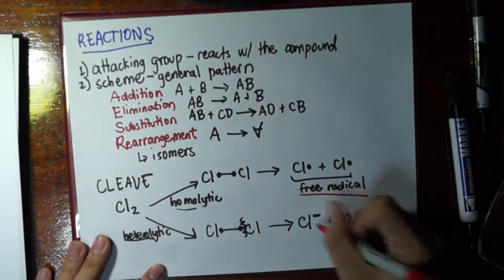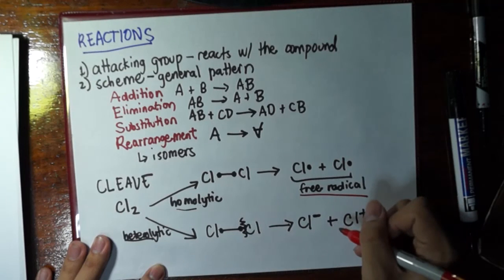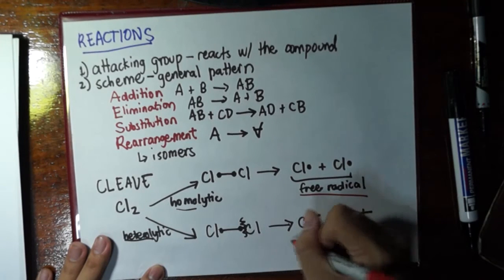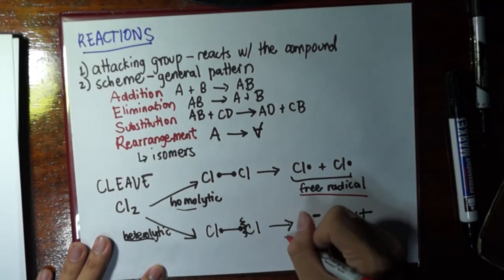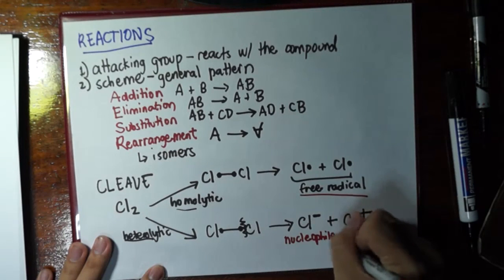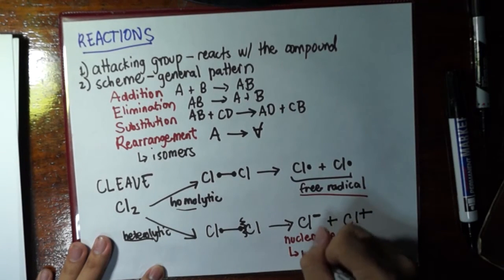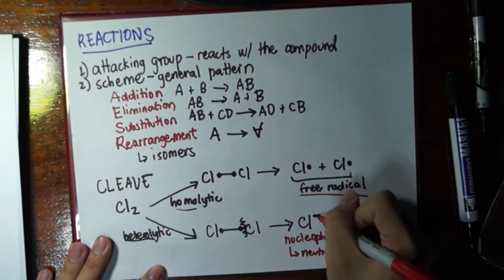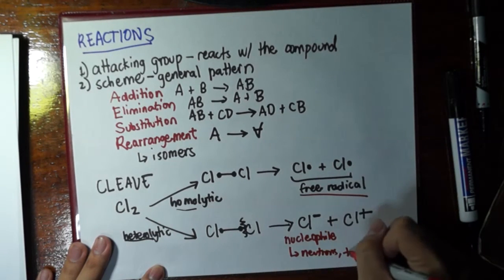So, here, we've already covered one of the attacking groups, the free radical. Here, if the attacking group is negative or more likely negative, it can be neutral, but most of the time it is negative, we say that this is a nucleophile. Why? Because, what's in the nucleus of an atom? Neutrons, protons. And since this is negative, most likely it would like protons.